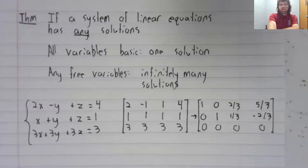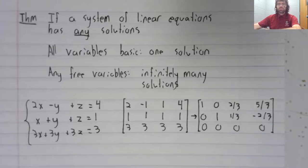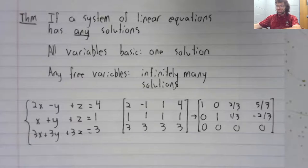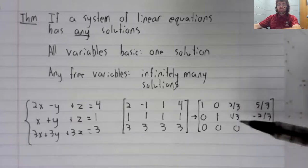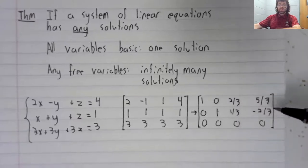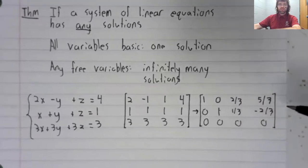And now we can apply this theorem. We start by observing that there are solutions. Our pivot positions are here and here. So the last column is not a pivot column.